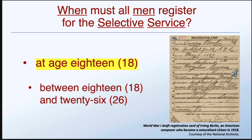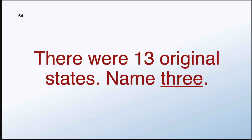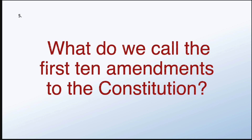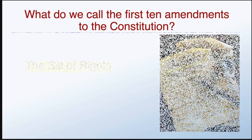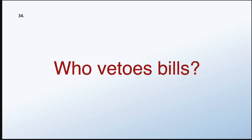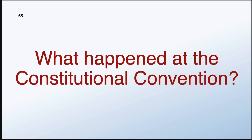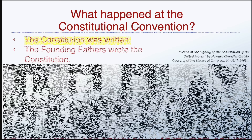There were 13 original states. Name three. New Hampshire, New York, New Jersey. What do we call the first 10 amendments to the Constitution? The Bill of Rights. Who vetoes bills? The president. What happened at the Constitutional Convention? The Constitution was written.